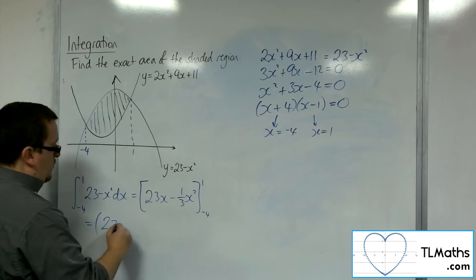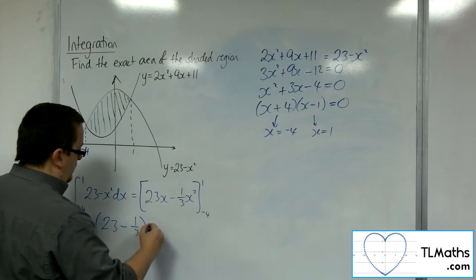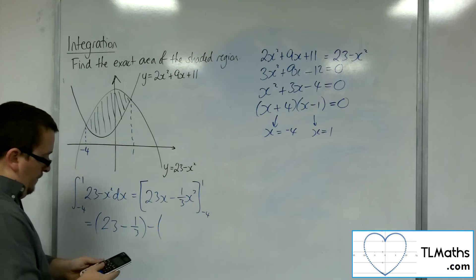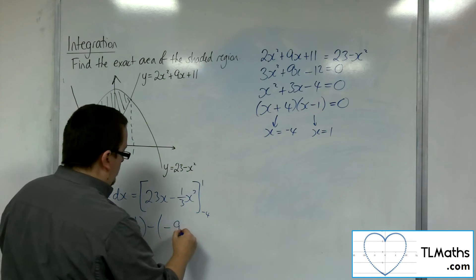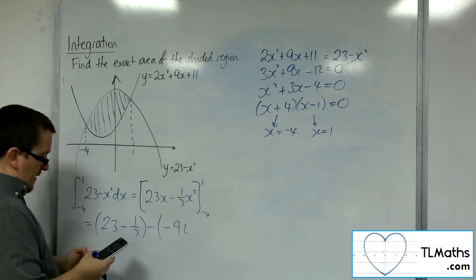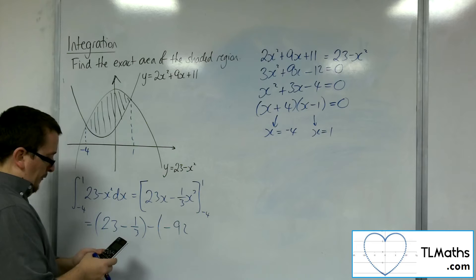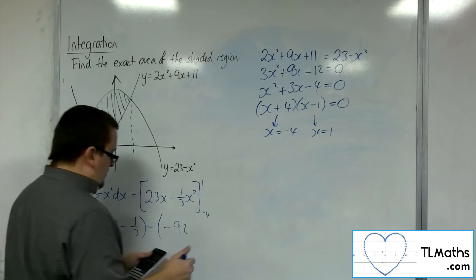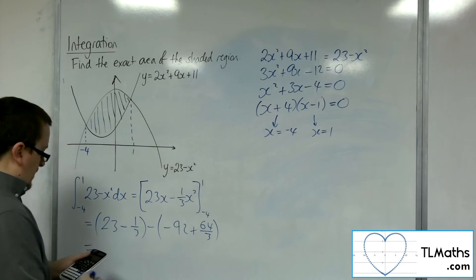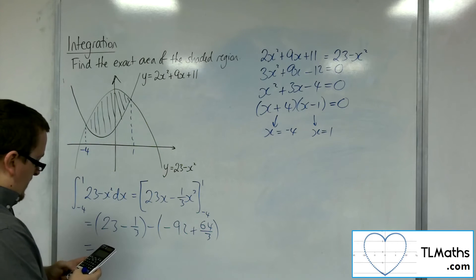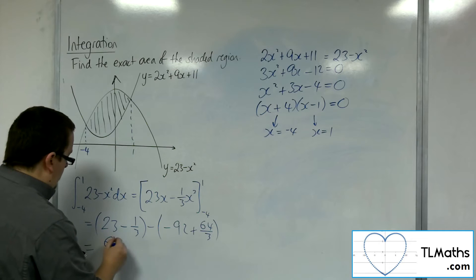Substituting the 1 first, we're going to have 23 take away a third. Substituting the minus 4, so 23 lots of minus 4 is minus 92. And then we're going to have the minus 1 third, times by minus 4 cubed, so 64 thirds. So we're going to have 23 take away a third, so 68 thirds.